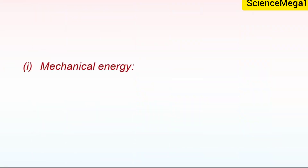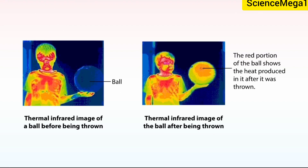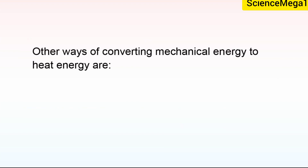One: mechanical energy. Mechanical energy is converted into heat energy whenever you bounce a ball. Each time the ball hits the ground, some of the energy of the ball's motion — that is kinetic energy — is converted into heating up the ball, causing it to slow down at each bounce. Other ways of converting mechanical energy to heat energy are friction, distortion, and compression.